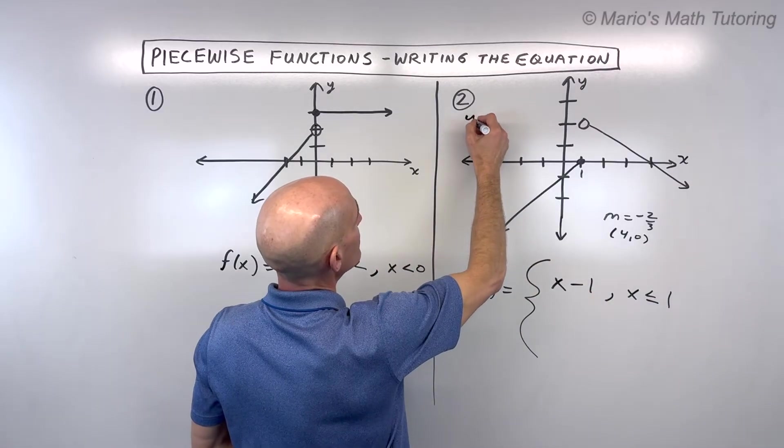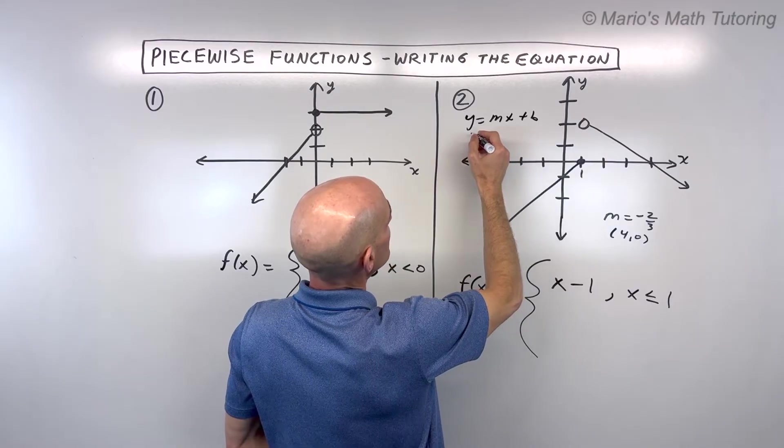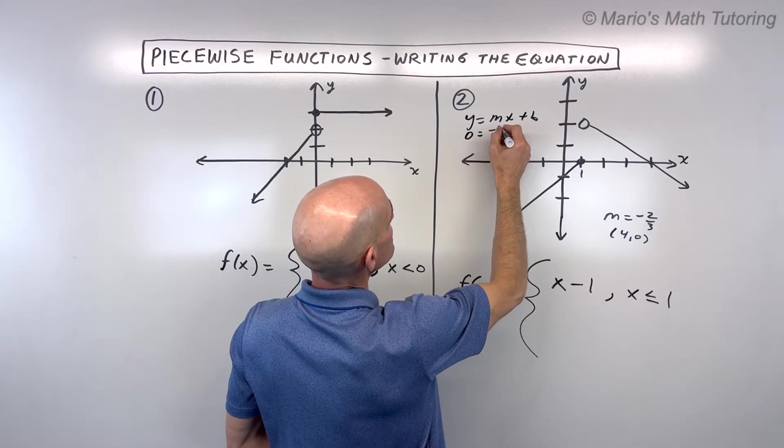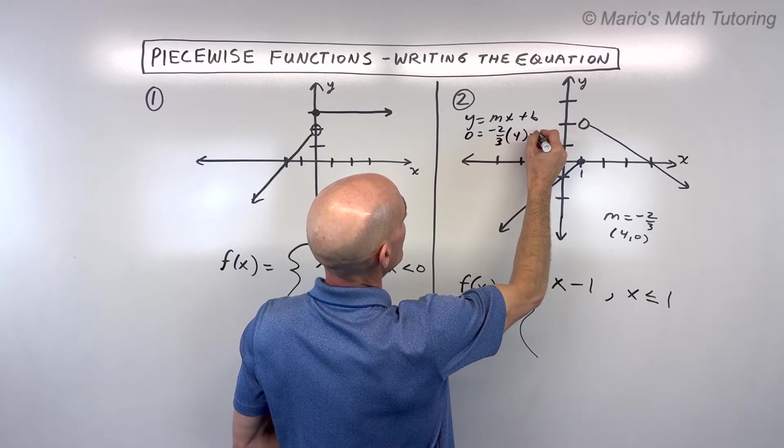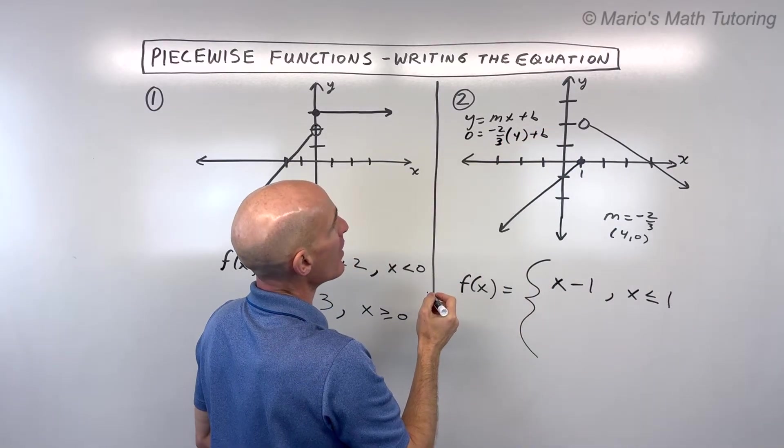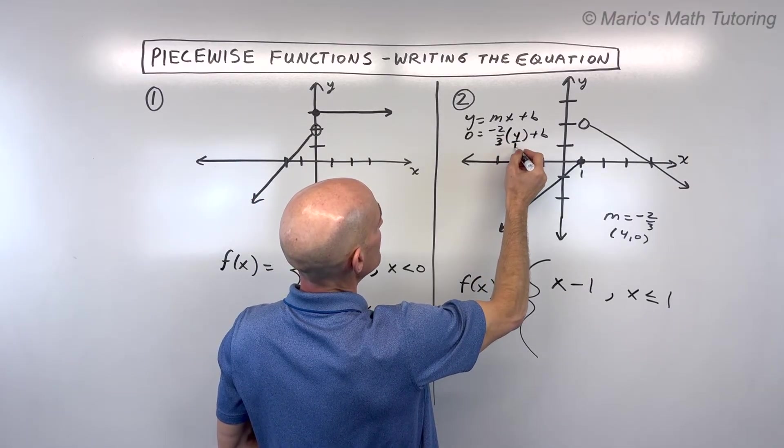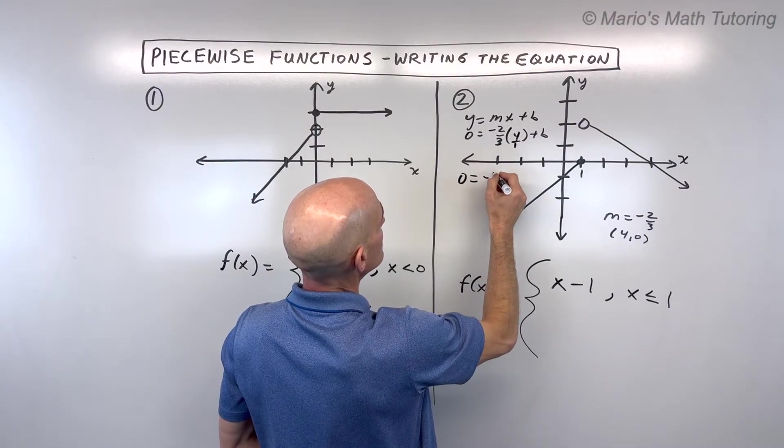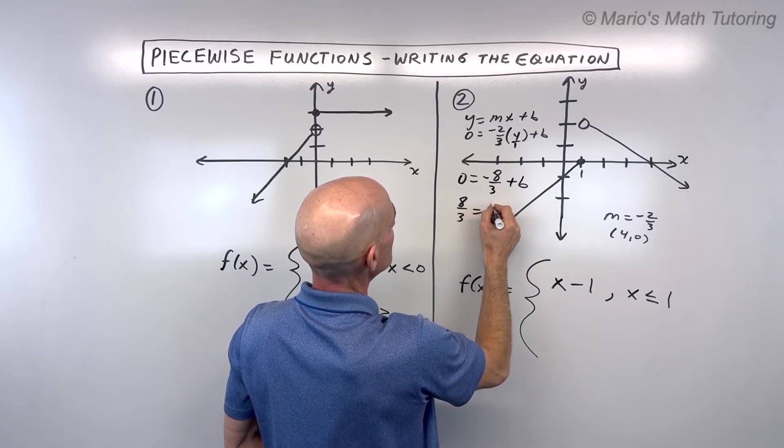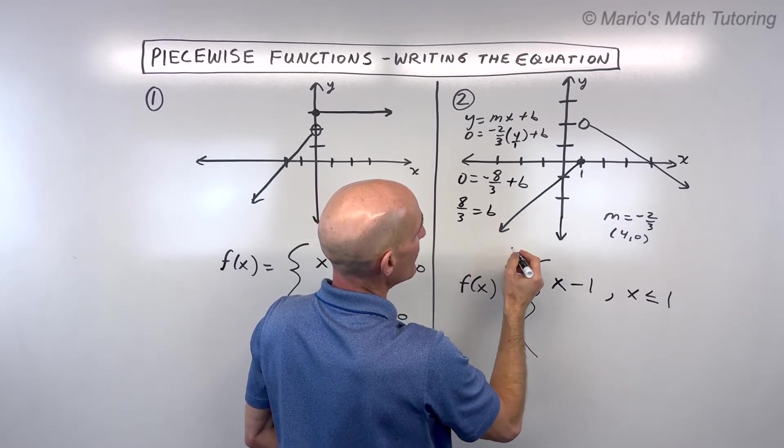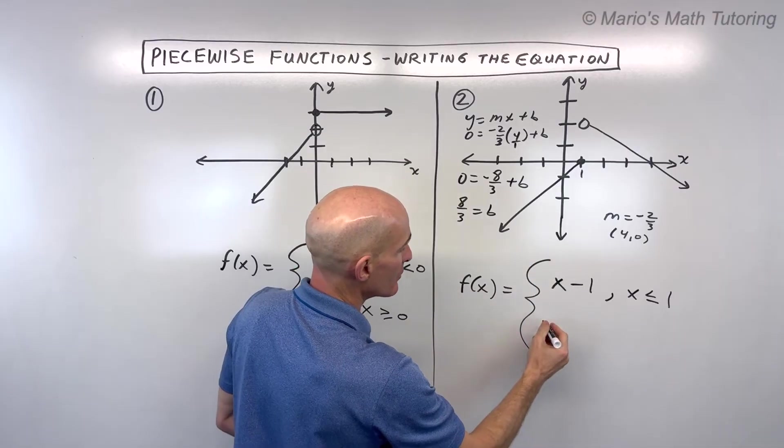So remember the equation of a line, y = mx + b. We know that when y is 0, the slope is negative 2/3, and x is 4. We can solve for our b-value or y-intercept where it crosses. This gives us negative 8/3 plus b. I'll just add 8/3 to both sides. That's our b-value. So now we have the equation of our line: y = -2/3x + 8/3.